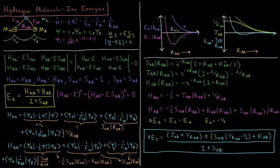Solving this determinant — this times this minus this times this equals zero — and solving that polynomial for the energies, we get two possible states, E+ and E−. The energy is equal to (H_AA plus or minus H_AB) divided by (one plus or minus the overlap of the two basis functions, S_AB).